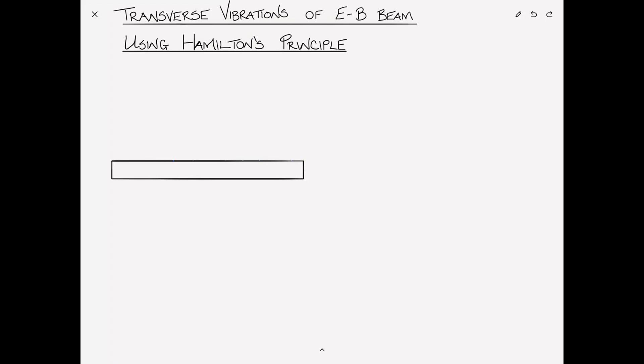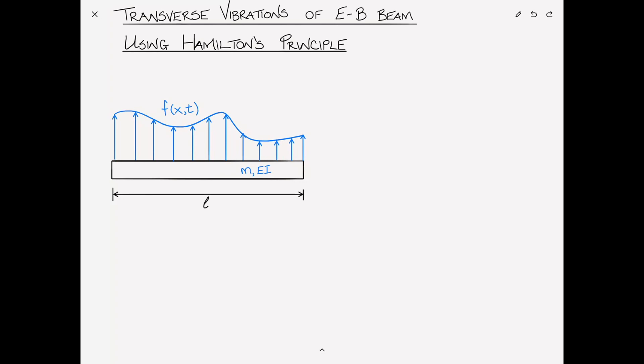Consider a slender beam with a distributed external load, we'll call this load F, and we'll assume that the beam has mass per unit length M and stiffness EI, and for simplicity's sake we'll assume that both M and EI are constant. Length of the beam is L. X is the axial coordinate with displacement U, and Z is the transverse direction with transverse displacement W.